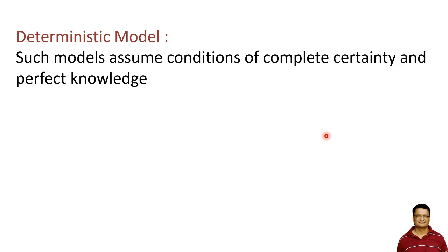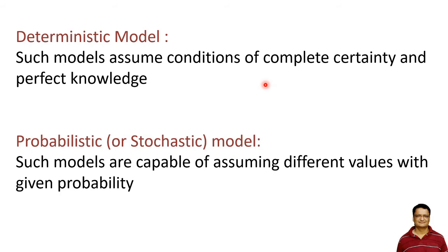Deterministic models assume conditions of complete certainty or perfect knowledge, whereas probabilistic or stochastic models consider the probability of certain events or activities occurring.